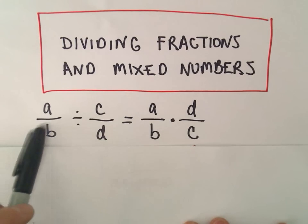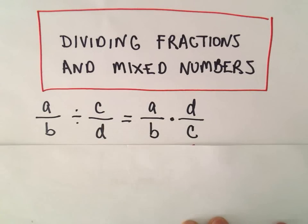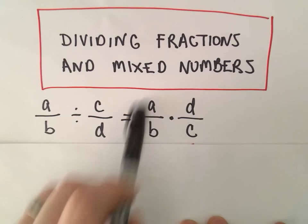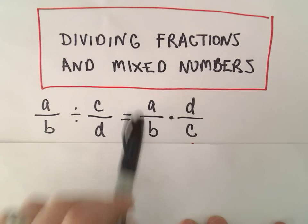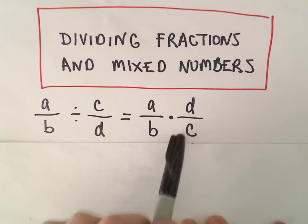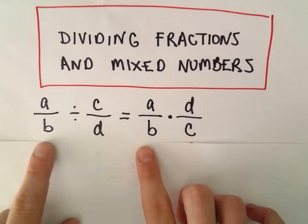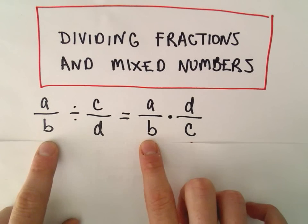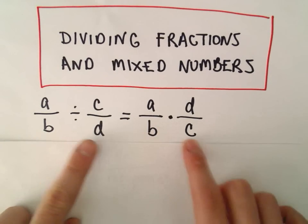To divide a fraction, a over b divided by c over d, we turn it into a multiplication problem by writing a over b times d over c. So we leave the first fraction alone, but instead of division, we use multiplication by the reciprocal.